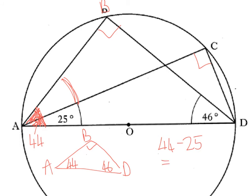That bit is 25. So the missing angle I'm after is literally 44 take away 25, which is 19. So the missing angle we're after is 19. Make sure to conclude the question: angle BAC equals 19 degrees.